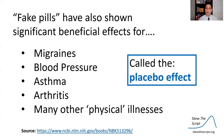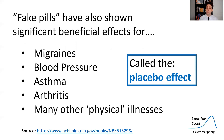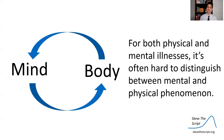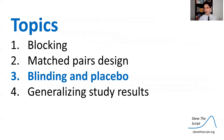This is called the placebo effect, and it occurs not just for what we consider mental disorders but also for physical ones. Fake pills have shown significant benefits and actual biological effects for migraines, blood pressure, asthma, arthritis, and many areas of physical illness. Mentally accepting that a pill will help you, even if there's nothing active in it, oftentimes creates a physical biological change. So for both physical and mental illness, it's often hard to distinguish what is mental and what is a physical phenomenon — mind, body, and brain are connected.